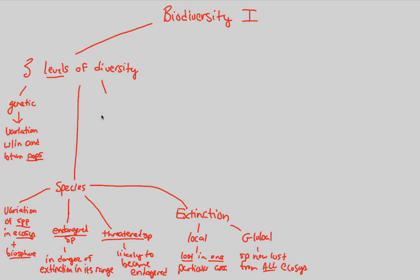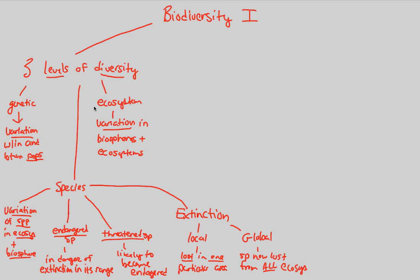One final level of biodiversity is the ecosystem level. At the ecosystem level of diversity, we again have variation — variation is always key in defining diversity. This is variation in a much broader sense: in the biospheres that we study and in ecosystems themselves. So that's a broader look at variation, but still a look at diversity in and of itself.